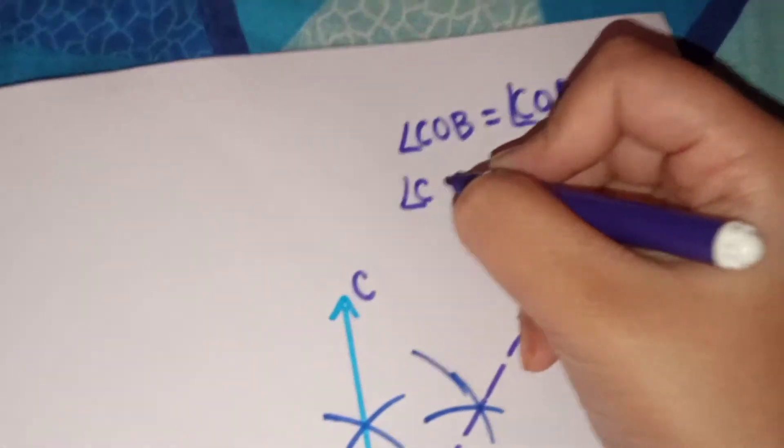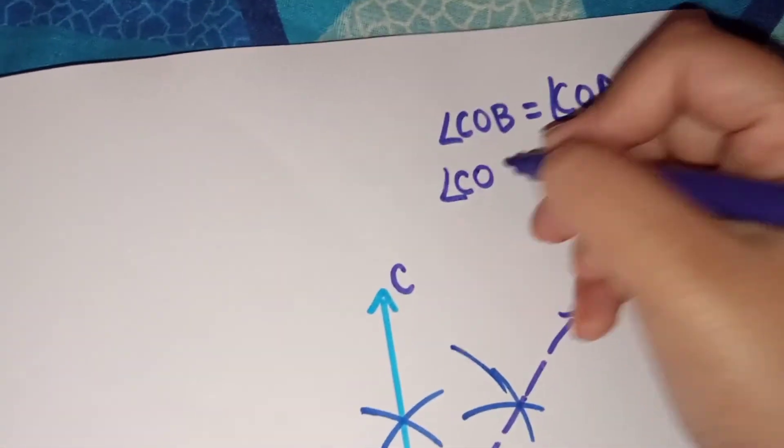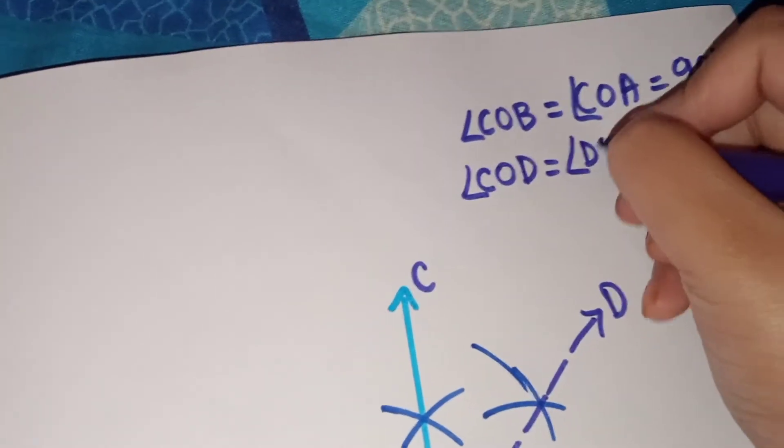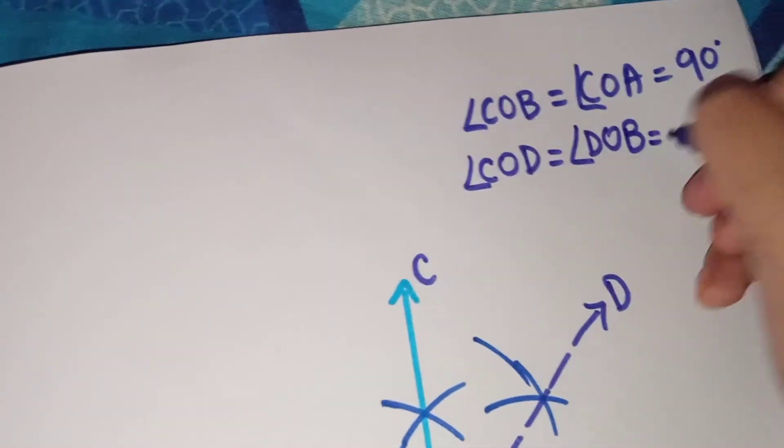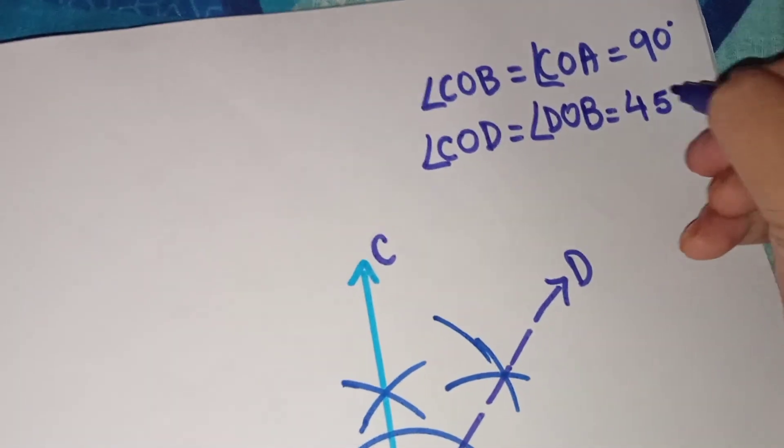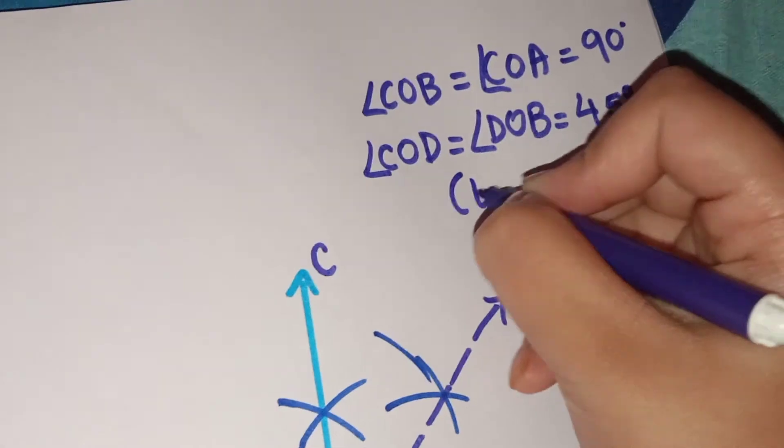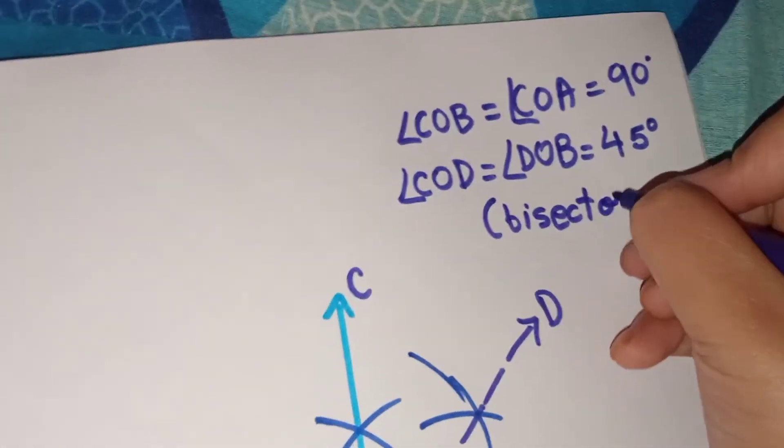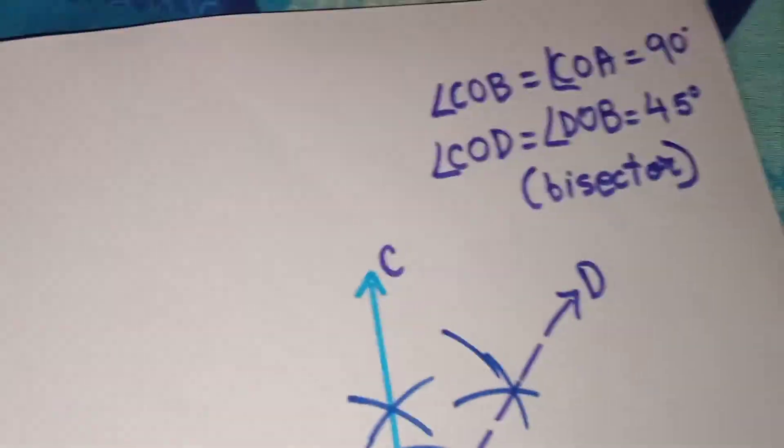COD is equal to DOB is equal to 45 degree, as it is the bisector of 90 degree and dividing equal parts of the angle. And that's why I will write here bisector.